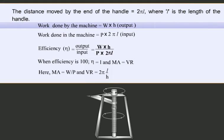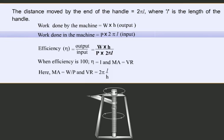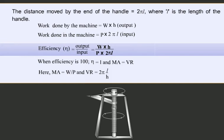Students, here work done by the machine is equal to W × H, that is the output, and the input or work done in the machine is equal to P × 2πL. So efficiency η is given by output divided by input, that is equal to (W × H) / (P × 2πL).